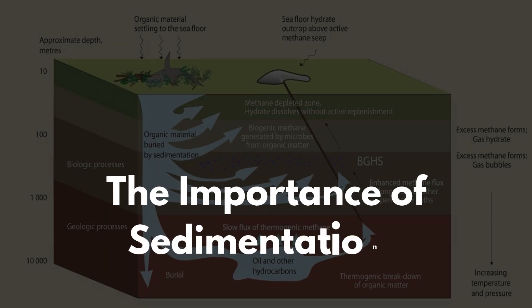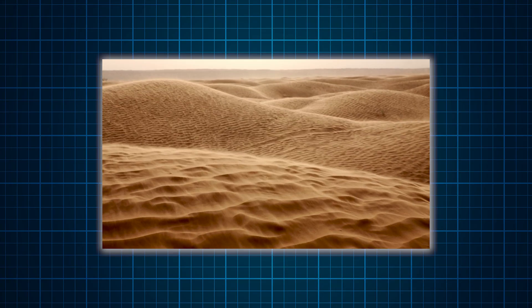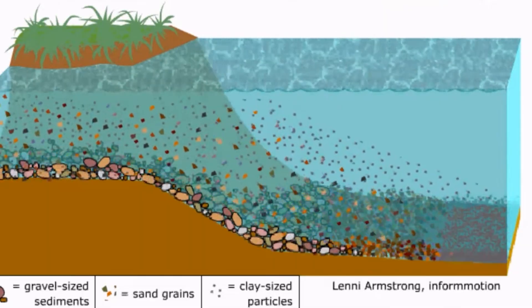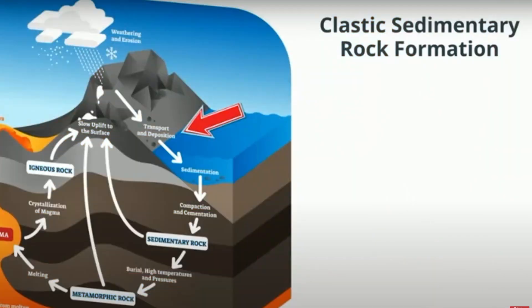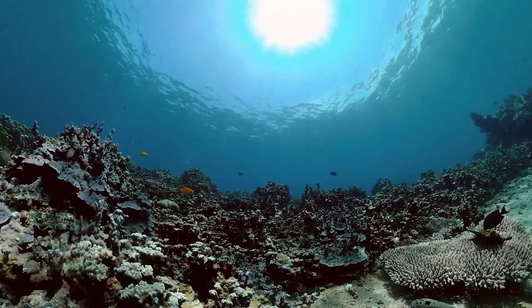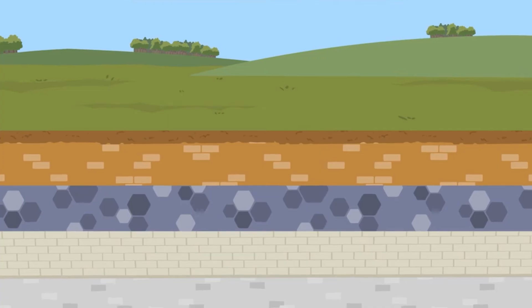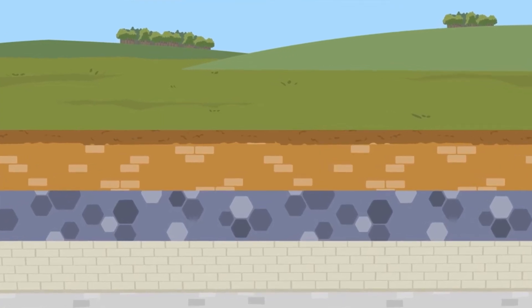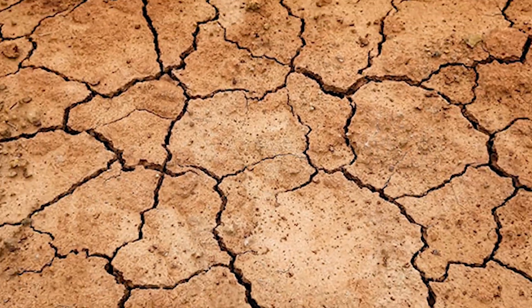Sedimentation is a critical step in the formation of oil and gas reserves. Once organic matter settles at the bottom of water bodies, it becomes covered by layers of sediment such as sand, silt, and clay. Over time, these sediments accumulate, compress, and form thick layers known as sedimentary rocks. The weight of these sediments exerts pressure on the organic-rich layers beneath, gradually compacting them. This process removes water and other impurities from the organic material, further concentrating the hydrocarbons. The sediments also act as a protective barrier, preventing oxygen from reaching the organic material and ensuring its preservation.